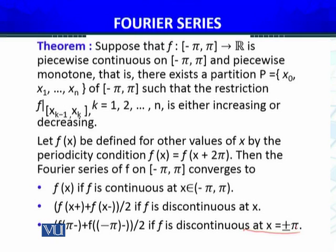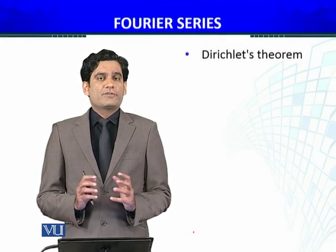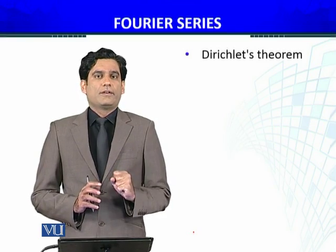In the most generic case, if F is piecewise continuous and monotone — either monotonically increasing or decreasing — then the Fourier series follows one of three cases: if it is an interior point and F is continuous there, it converges to F(x); if F is discontinuous, it converges to the mean of the left and right values; and similarly at the end points. We have discussed Dirichlet's theorem, which addresses the convergence of the Fourier series.